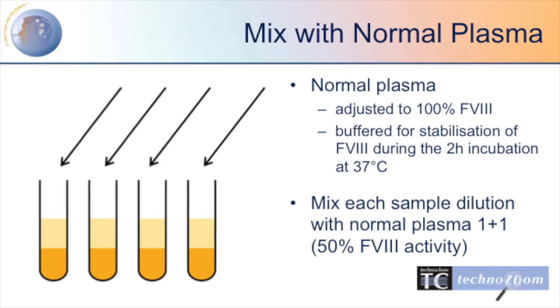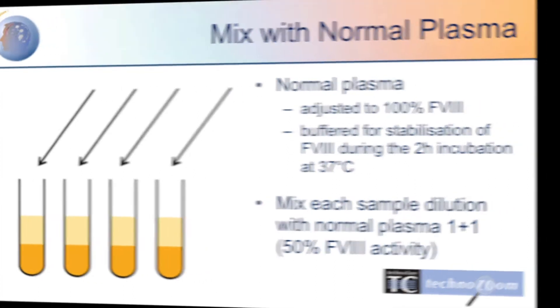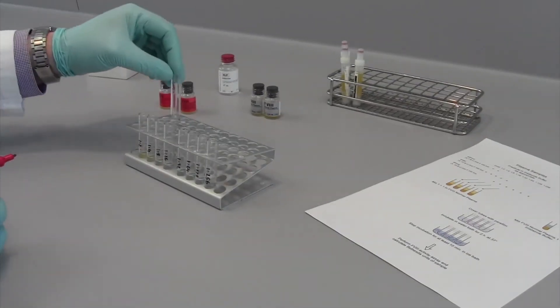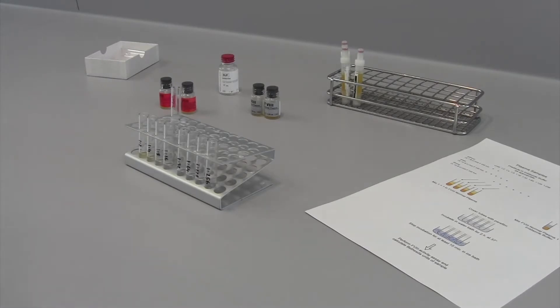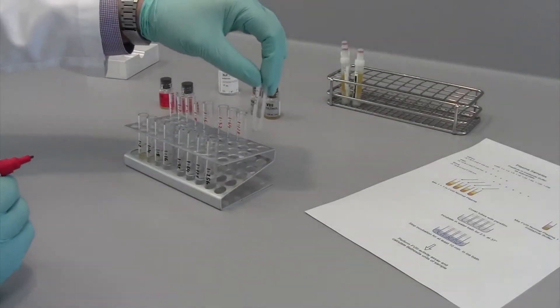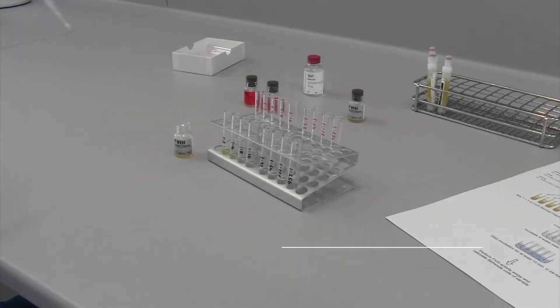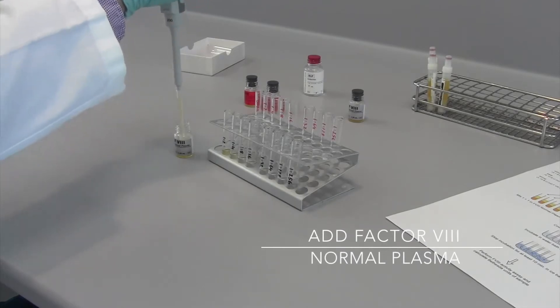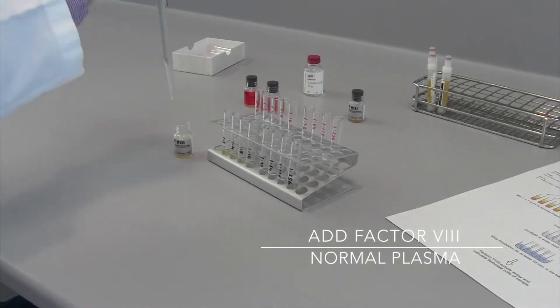We proceed with preparing the mixture of Factor VIII normal plasma. Once again, it is important to pre-label the tubes accordingly. Then, add appropriate volumes of Factor VIII normal plasma, for example 100 microliters per tube.